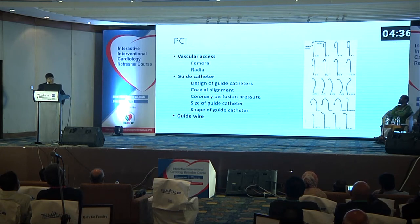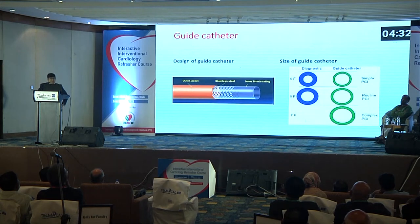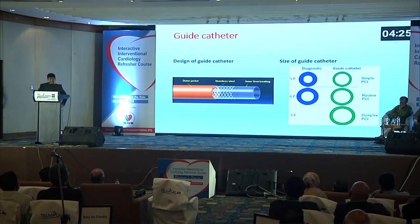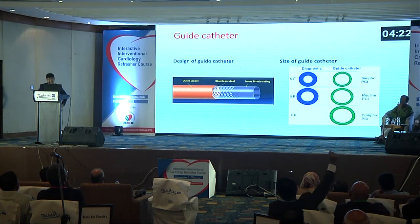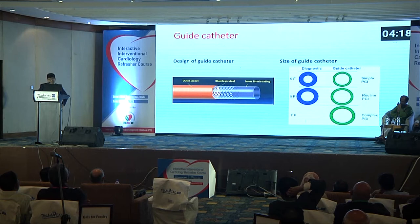In the lateral picture, I'm showing the shapes of some guide catheters. For guide catheter design, it has an outer jacket, an inner liner coating, and catheter size. For diagnostic purpose we can use 5 French or 6 French, and a guide catheter for simple PCI beginning from 5 to 7 French.